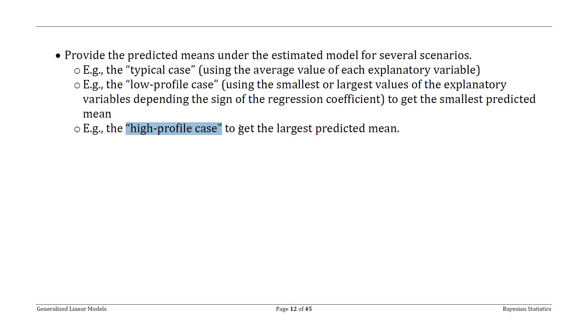So if the relationship between a predictor and the response is positive, you would plug in the maximum value of that particular predictor into your posterior distribution. Similarly, if the effect was negative, you would actually use the smallest value of that predictor variable and plug that into your posterior distribution.